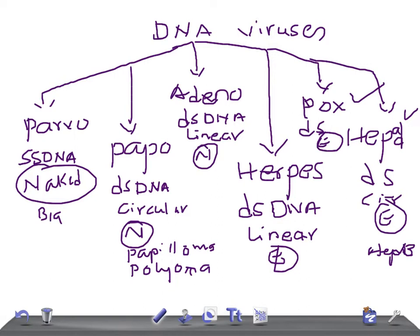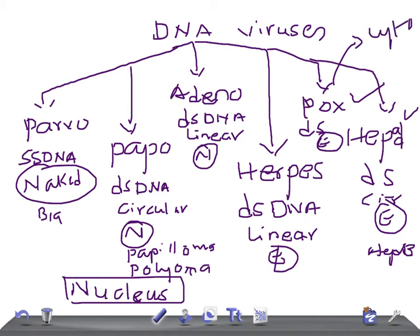DNA replication: for Parvovirus up through Herpes and Hepadna, the DNA replicates in the nucleus — excluding Pox virus. Pox virus is the exception: its DNA replicates in the cytoplasm. So most DNA viruses replicate in the nucleus, except Pox virus which replicates in the cytoplasm.